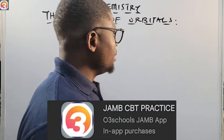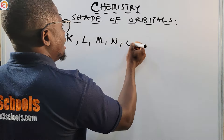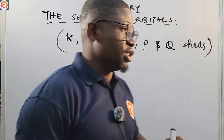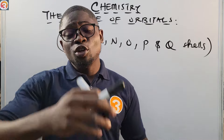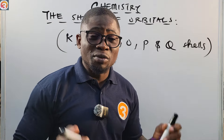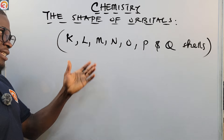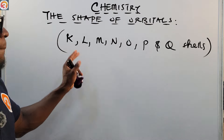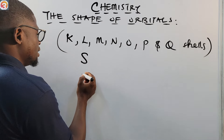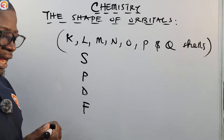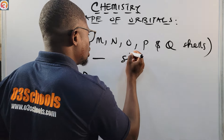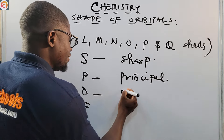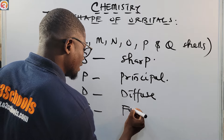Now, the shape of orbitals. There are principally four types of orbitals that make up the K, L, M, N, O, P, and Q shells. These four types are the S, P, D, and F orbitals. S stands for sharp, P stands for principal, D stands for diffuse, and F stands for fundamental. Take note of this.